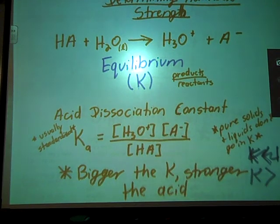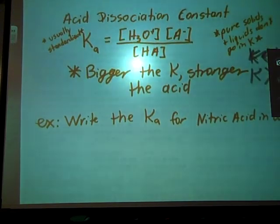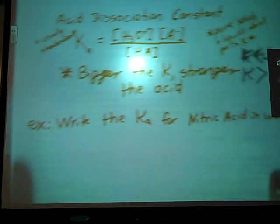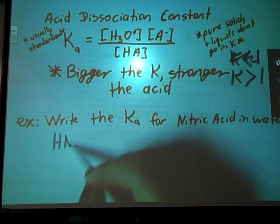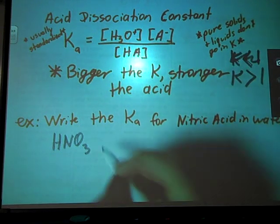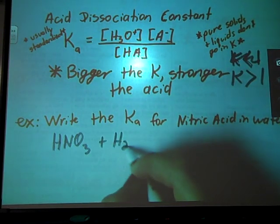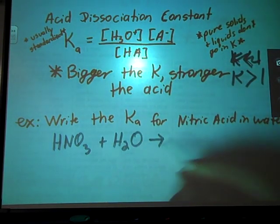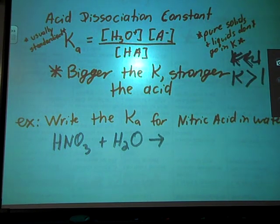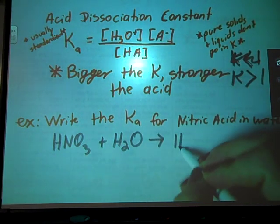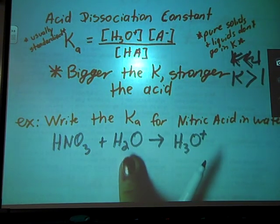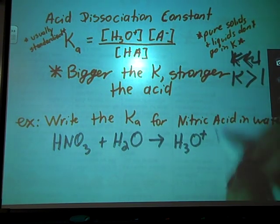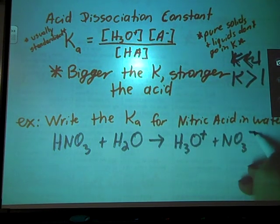So for example, if we were to write the Ka for nitric acid in water. So I take nitric acid and I put it in water. On the opposite side, I'm going to have hydronium. So my water has picked up an additional hydrogen and that nitrate ion.